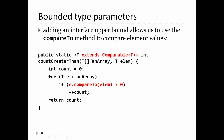Notice that the keyword is always extends, even though Comparable is an interface. When a class implements an interface, the keyword is implements. But when you want to restrict or bound a generic type, the keyword is extends. That's a bounded, or upper bound, on a type parameter.